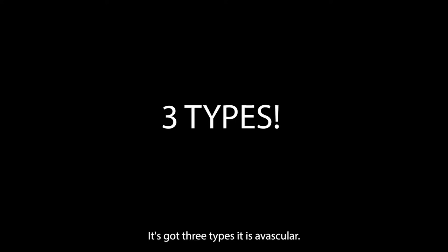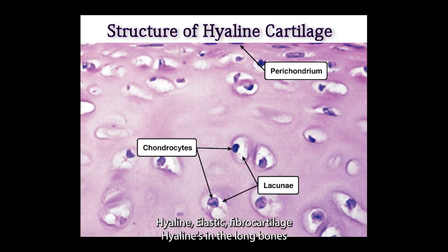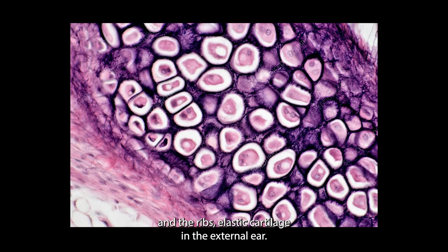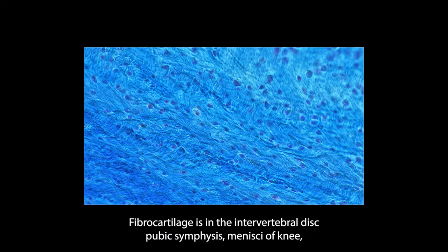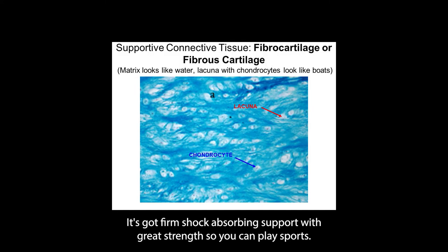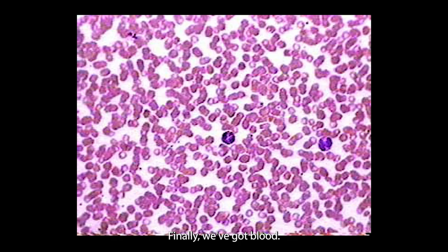Cartilage - it's got three types. It is avascular. Hyaline cartilage: in the long bones and the ribs. Elastic cartilage: in the external ear, the epiglottis. Provides structure with flexibility. Fibrocartilage: is the intervertebral disc, pubic symphysis, menisci of knee and joints. It's got firm shock-absorbing support with great strength so you can play sports.